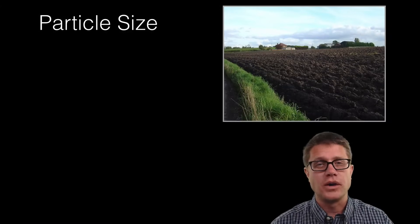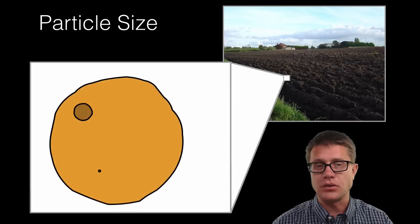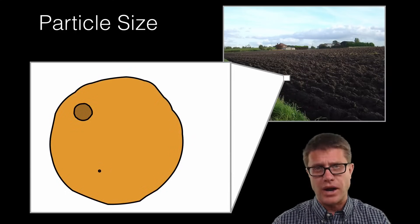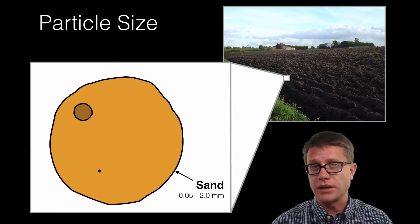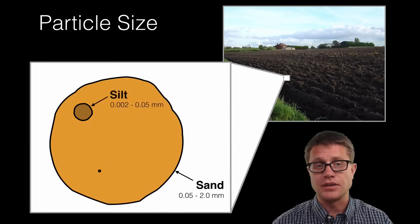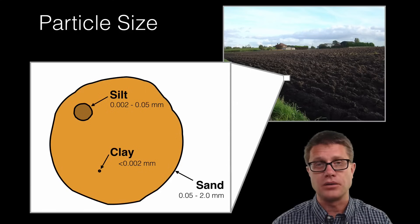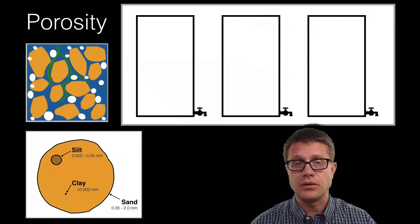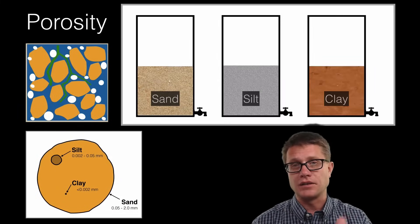Particle size contributes to what type of soil we are talking about. So this is a loam on the right side — if we look at that soil it is going to have varying sizes. We could go from very big like boulder to gravel, but eventually when we get to the level of the soil we have got sand. Sand is going to be relatively large in the soil. We then have silt, and then finally we have clay. Clay is going to be particles that are smaller than two thousandths of a millimeter — really, really fine particles.